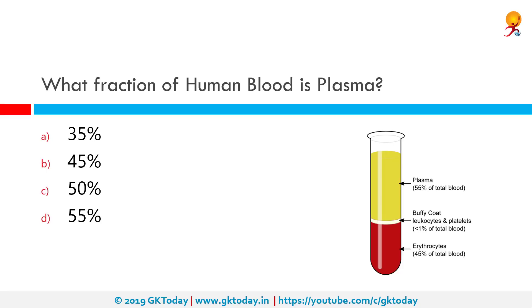What fraction of human blood is plasma? The correct answer is 55%. Blood plasma is the liquid component of whole blood and makes up approximately 55% of the total volume of blood. It is composed primarily of water with small amounts of minerals, salts, ions, nutrients, and proteins in solution. In whole blood, red blood cells, leukocytes, and platelets are suspended within the plasma.